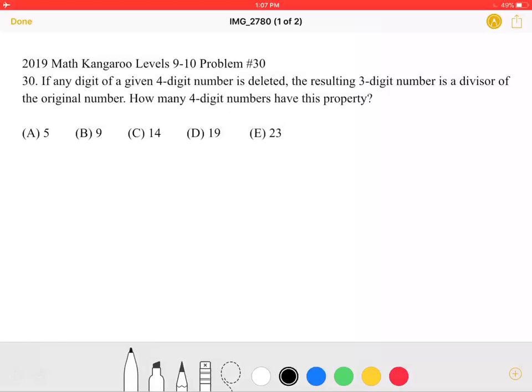This is the 2019 Math Kangaroo Levels 9-10, problem number 30. If any digit of a given four-digit number is deleted, the resulting three-digit number is a divisor of the original number. How many four-digit numbers have this property? A, 5, B, 9, C, 14, D, 19, or E, 23.